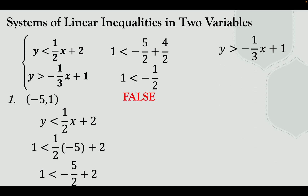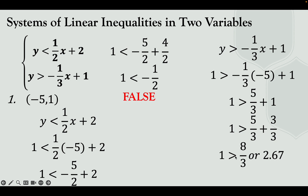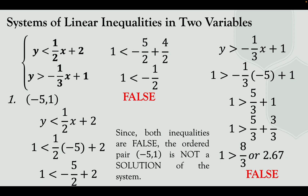Now check the second inequality: y greater than negative one-third x plus 1. Substituting: 1 greater than negative one-third times negative 5 plus 1, gives positive 5 thirds plus 3 thirds, which is 8 thirds, or approximately 2.67. Is 1 greater than 2.67? No, that is false. Since both inequalities are false, the ordered pair negative 5 and 1 is not a solution of the given system.